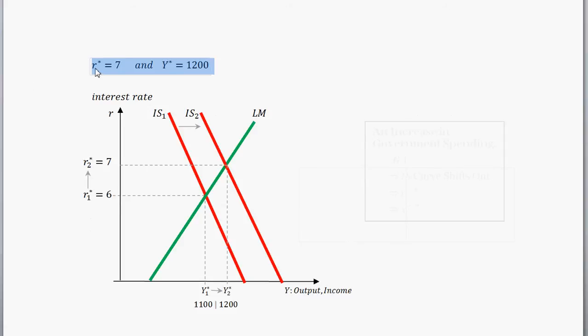Cool. So that's summarized here. The new equilibrium real interest rate is 7, and the new equilibrium output is 1200. So where before our initial IS curve went down here, and we had equilibrium real interest rate of 6 and output of 1100, when we increase government spending, we shift out this IS curve to our new IS curve, IS sub 2 here. And that's associated with higher output and higher real interest rates.